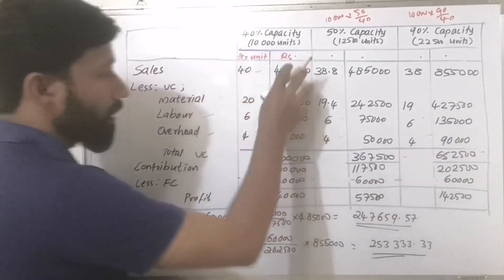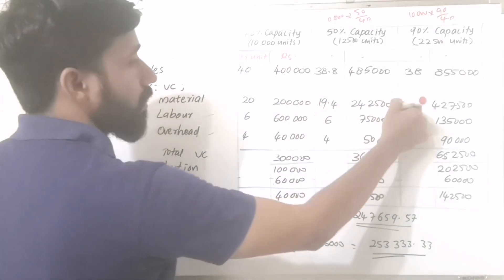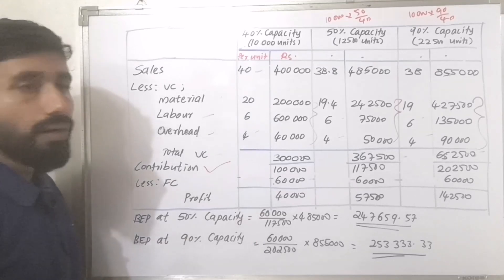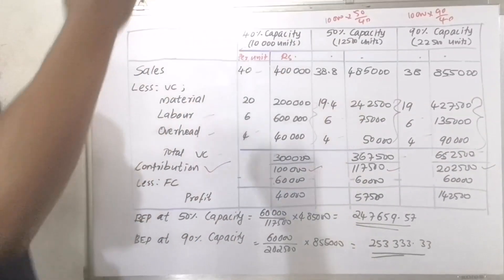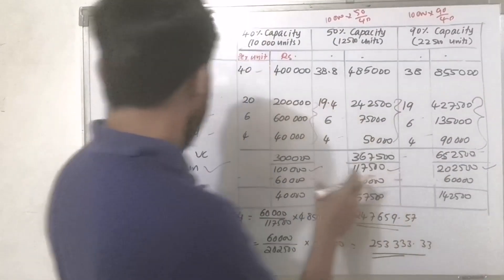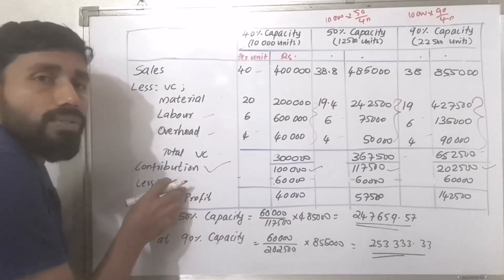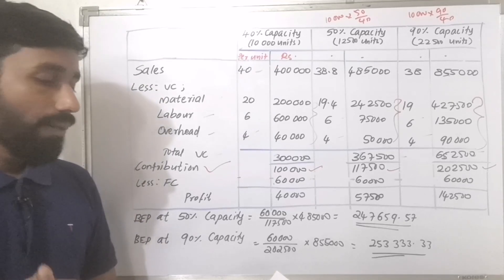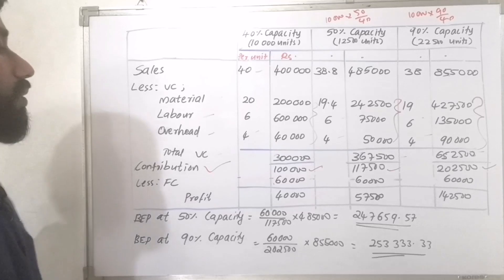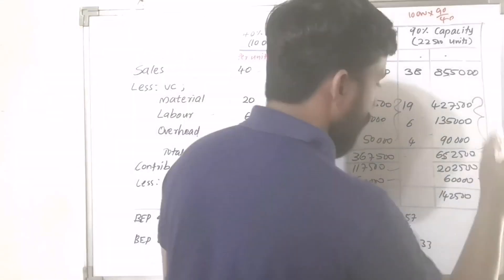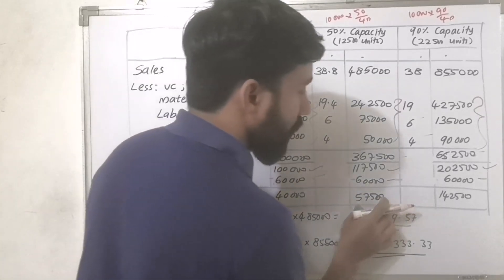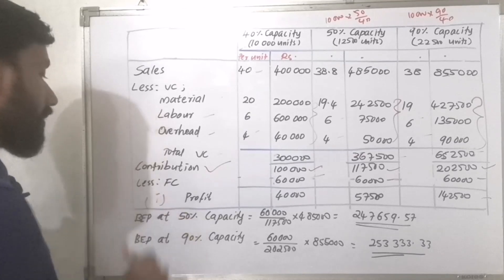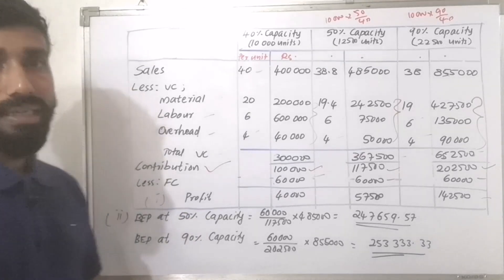We calculate the total variable cost and subtract from sales to get contribution. Contribution is 1,17,500 at 50% capacity and 2,25,000 at 90% capacity. Subtracting fixed costs, the profit is Rs. 50,500. The first part of the answer is the profit calculation.